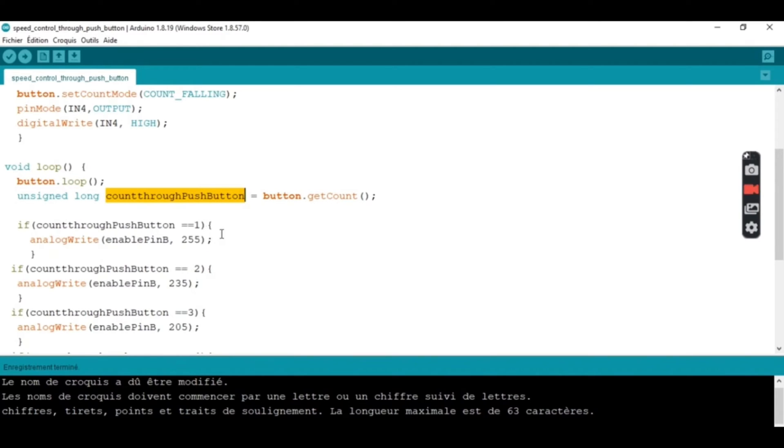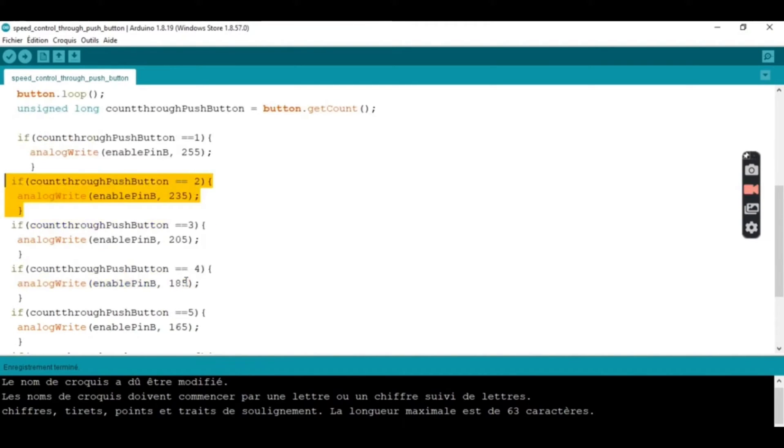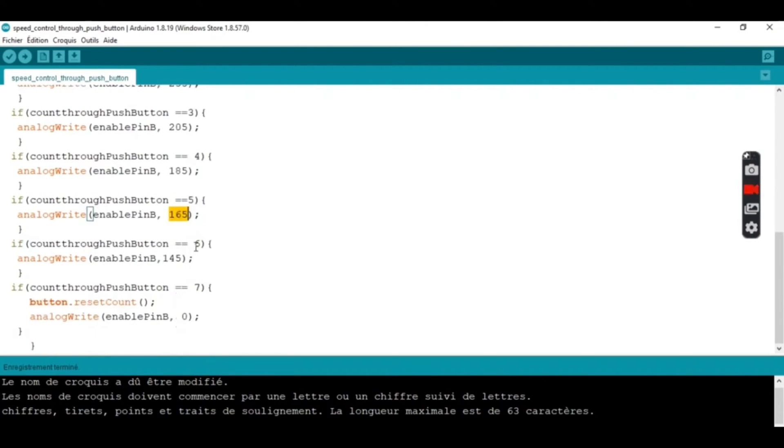So when we count 1, this motor will be at full speed because 255 is 5 volts PWM signal. When we count 2, we decrease the speed. When we count 3, the speed will be less important. 4, the speed will be even less important. 5, slowly. 6, slowly. And 7, the speed is zero. PWM signal is zero. And then we reset count, we start again at zero.